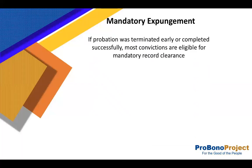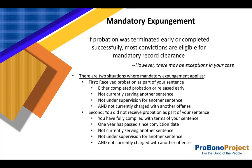For an explanation of what Record Clearance or Mandatory Expungement is, please see our YouTube video presentation on this subject. To receive Mandatory Expungement, if probation was successfully completed or terminated early, most convictions are eligible for Mandatory Record Clearance. However, there may be exceptions in your case. There are two situations where Mandatory Expungement is in play. One: you received probation as part of your sentence and either completed it or were released early, you are not currently serving or under supervision for another offense, and you are not currently charged with another offense.